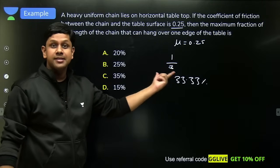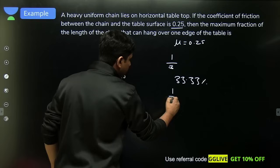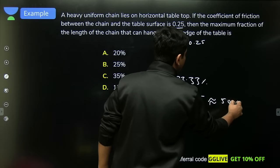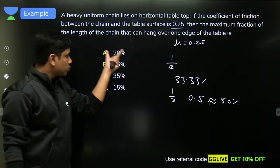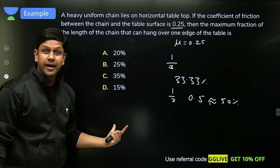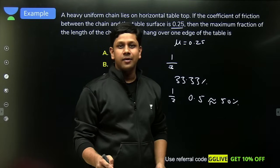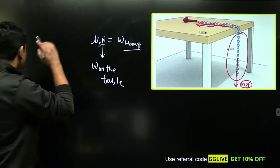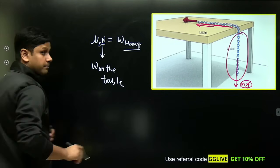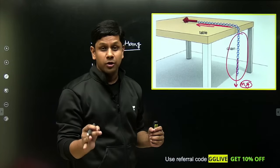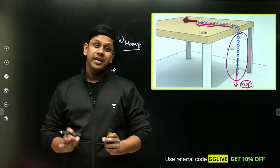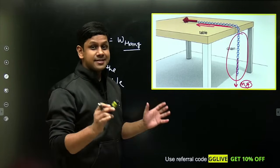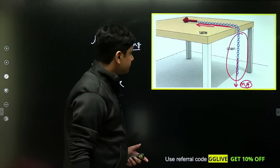The options are 20%, 25%, 35%, or 15%. You have to calculate the fraction first that can hang, then convert to percent. For example, if your answer is 1/2, that's 0.5 which equals 50%. I am giving you the best possible solution where you can also remember a final result to solve this question in seconds.